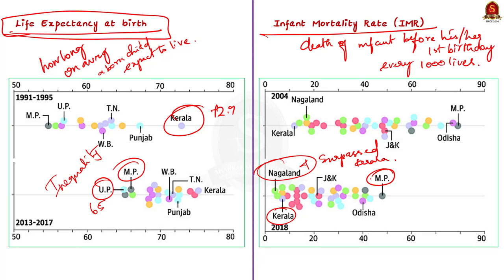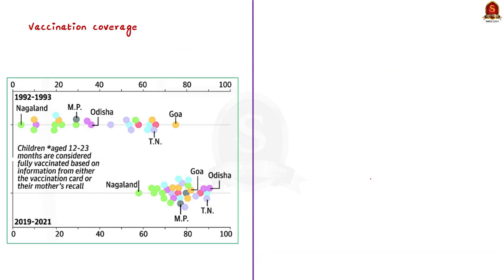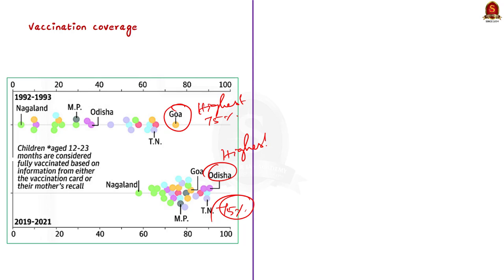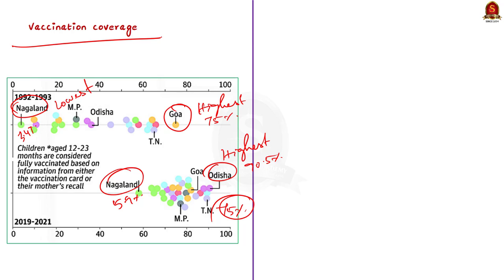Coming to the third graph, this is with respect to vaccination coverage in India. In 1992, only 35.4% of children were vaccinated, but in 2019 to 2021, 75% of children were vaccinated. In 1993, Goa had the highest vaccination coverage of 75%, and in 2019 to 2021 Odisha had the highest at 90.5%. Both in 1993 and 2019 to 2021, Nagaland had the lowest vaccination coverage of 3.8% and 5.9% respectively. We are discussing this data to give you an idea — you don't need to memorize every number.